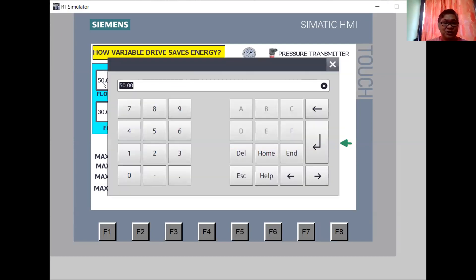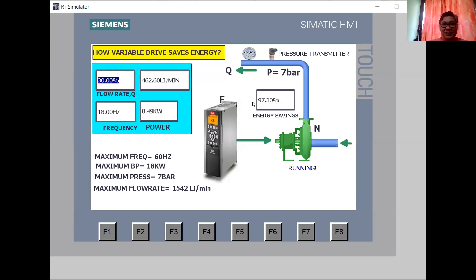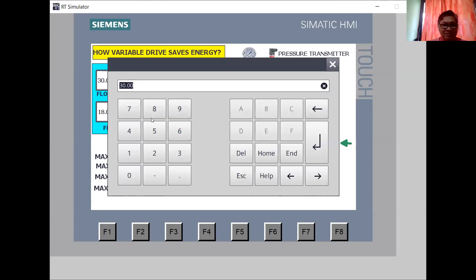If I reduce to 30% flow rate demand, you actually have an energy savings of 97.3% and your power is only 0.49 kilowatt.